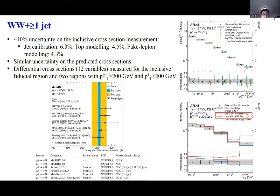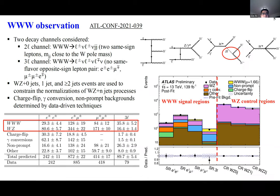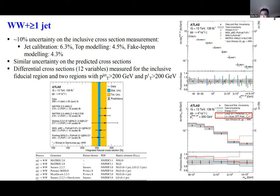Differential cross-section measurements were also performed for the inclusive fiducial region and two boosted regions — leading jet p_T greater than 200 GeV and leading lepton p_T greater than 200 GeV — for 12 variables. Overall good agreement is observed with different calculations. The e-mu invariant mass distribution is also used to constrain the c_W parameter, representing new physics effects in the EFT framework.